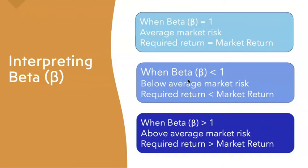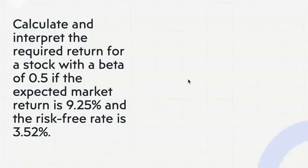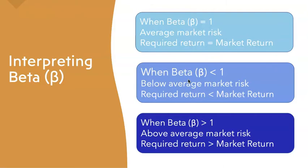Interpreting beta: when beta equals 1, the stock has average market risk and the required return equals the market return — these are called average stocks. When beta is less than 1, the stock has below-average market risk, and the required return will be lower than the market return. When beta is above 1, the stock has above-average market risk, and the required return will be greater than the market return.